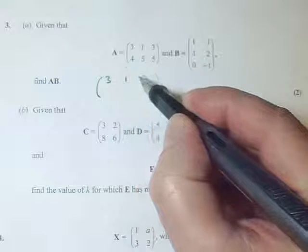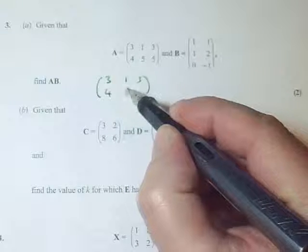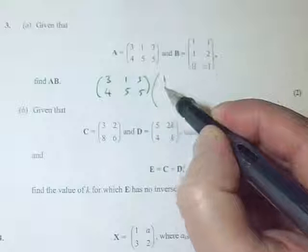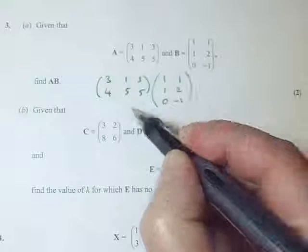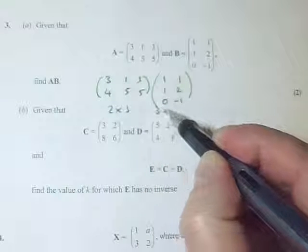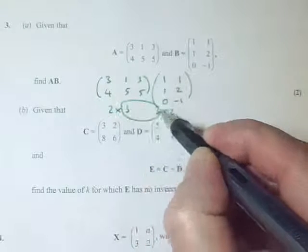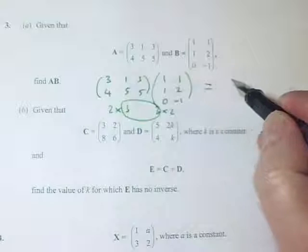So we've got 3, 1, 3, 4, 5, 5, times 1, 1, 0, 1, 2, minus 1. We've got 2 by 3. We've got 3 by 2. These match, so we know the answer is going to be 2 by 2.